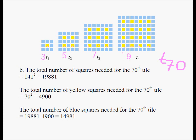What's the relationship between 1 and 3, 2 and 5, 3 and 7, 4 and 9? It's twice the tile number plus 1: 4 times 2 plus 1 is 9, 3 times 2 plus 1 is 7, 2 times 2 plus 1 is 5, and 1 times 2 plus 1 is 3. The number of blue squares on each edge is the same. So for T₇₀, we're going to have 70 times 2 plus 1 = 141 blue squares on this edge and also 141 blue squares on the other edge.